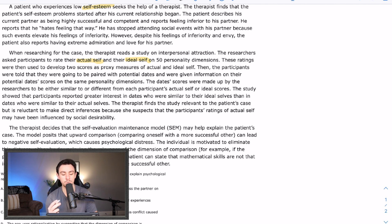And were given information on their potential date scores on the same personality dimensions. After that, the AAMC made a new Netflix special titled... I'm just kidding. New Netflix special titled Chemistry. All right. So the date scores were made up by the researchers to be either similar to or different from each participant's actual self or ideal scores. The study showed that participants reported greater interest in dates who were similar to their ideal selves than in dates who were similar to their actual selves. Therapist finds that the study relevant to the patient's case, but is reluctant to make direct inferences because she suspects that the participants' ratings of actual self may have been influenced by social desirability. So social desirability is another term, but also there is a relationship in here. And that relationship is the idea that you tend to prefer someone that's closer to your ideal self more than your actual self.